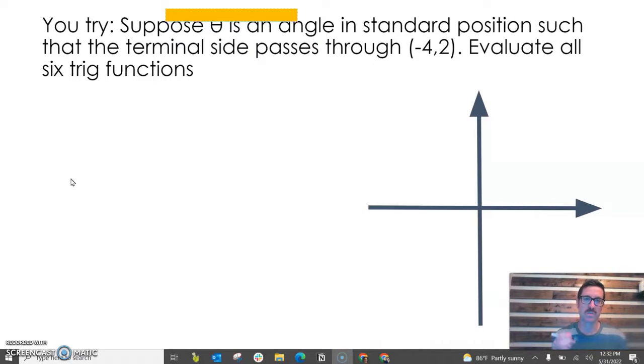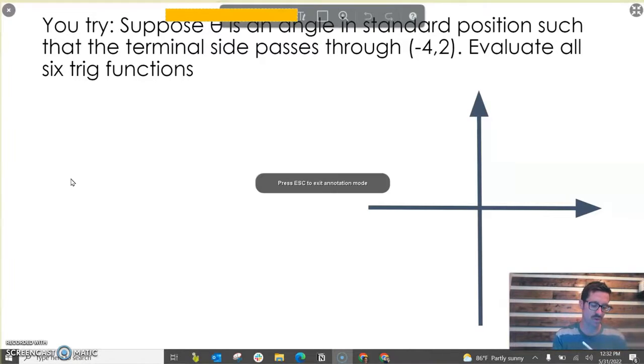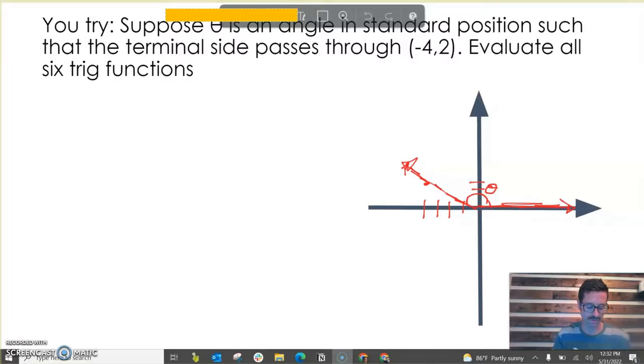Suppose an angle's in standard position such that the terminal side passes through (-4, 2). So we're up here in the second quadrant. We've got our initial side over there. So there is our angle for which we are defining our trig ratios. We've got this y value of two and this x value of negative four.